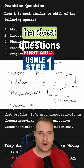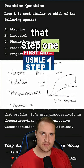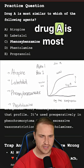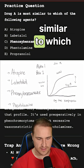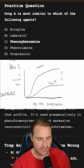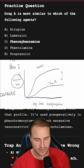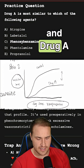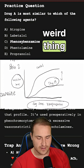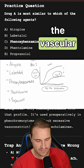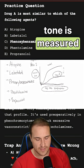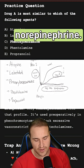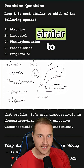Hello everybody. Today I'm going to explain one of the hardest questions that Step 1 can ask you in one YouTube short. Drug A is most similar to which of the following? We have a graph where we have the vascular tone on the Y-axis and the log dose of norepinephrine on the X-axis. Drug A is doing this weird thing where you have less vascular tone, measured after we've given them norepinephrine. What is drug A similar to?